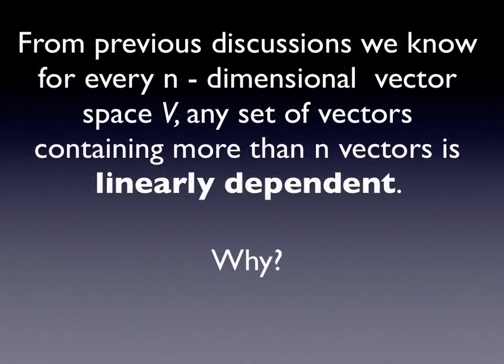For every n-dimensional vector space V, any set of vectors containing more than n vectors is linearly dependent. This is because if you have an n-dimensional space and you have n linearly independent vectors, then those n linearly independent vectors form a basis. So if you have a set containing more than those n vectors, then that set of vectors in that vector space has to be linearly dependent, because you have at least one vector too many.